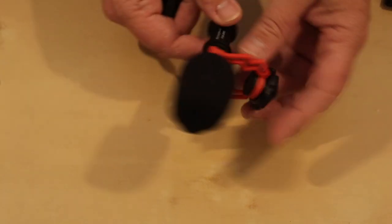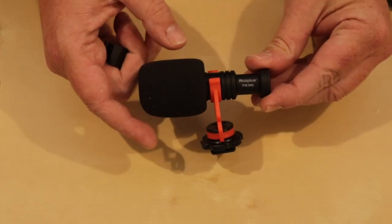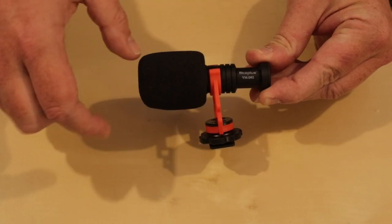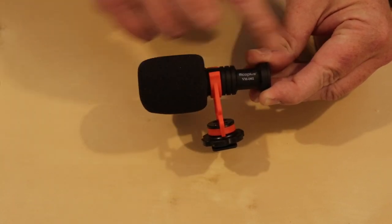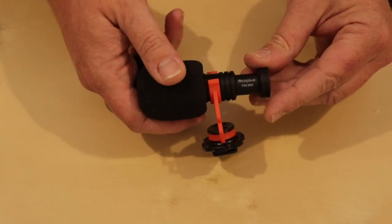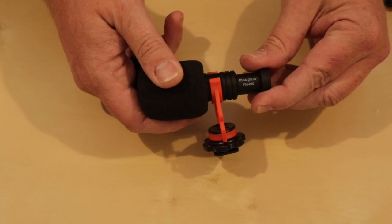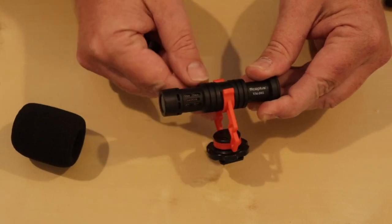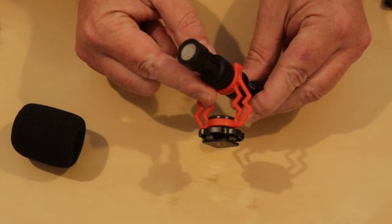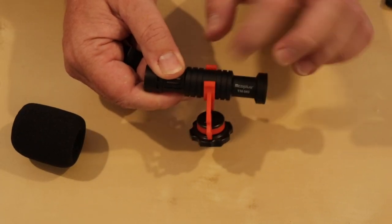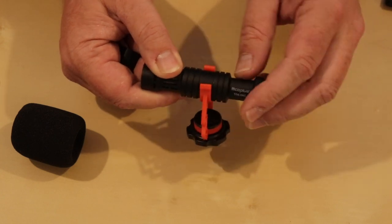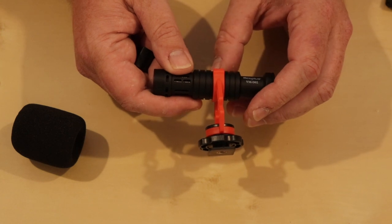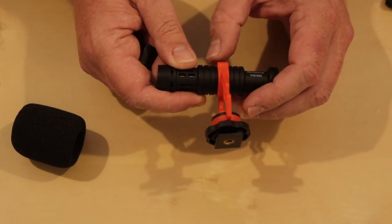And then we have the actual microphone itself. So it comes presented on the actual stand, which we'll come to in just a moment. We also have a foam windshield on the microphone itself, so we'll just slide that off and just have a look at the microphone underneath. It seems a very solid and sounds like a very solid plastic, so it should encounter a few drops and not take any damage, hopefully.